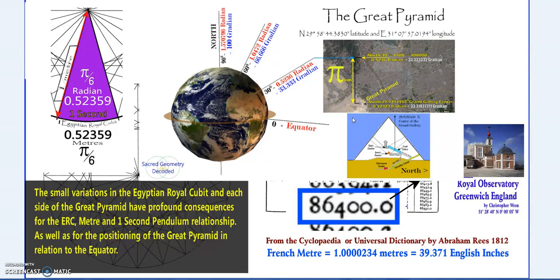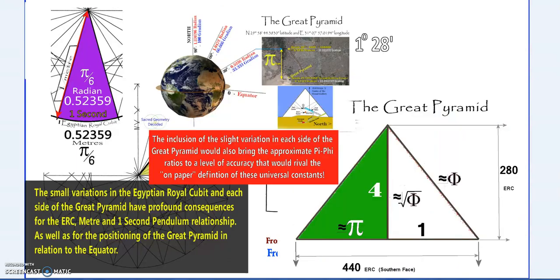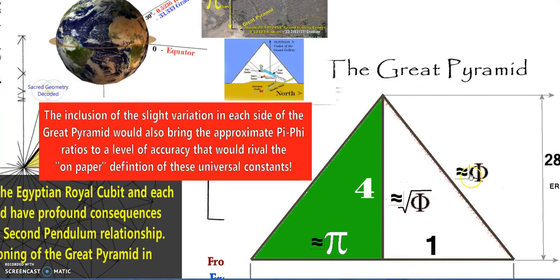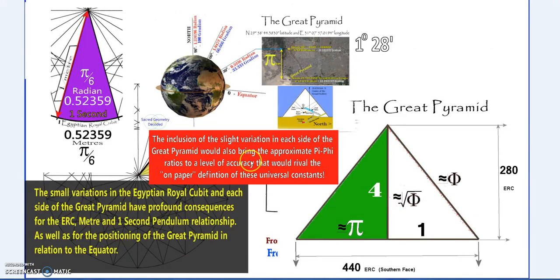If we include the slight variations on each side of the pyramid—it's famously the relationship of the pyramid to pi and phi. At your idealized standard measures, when each side is exactly 440 and 280 high, we get a very close approximate of phi.